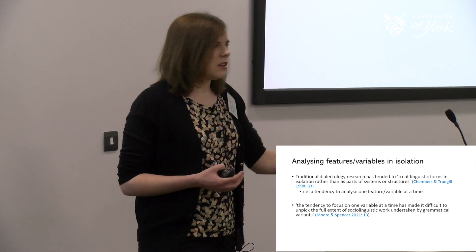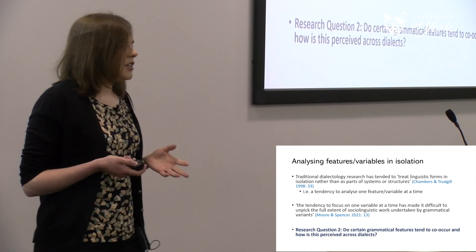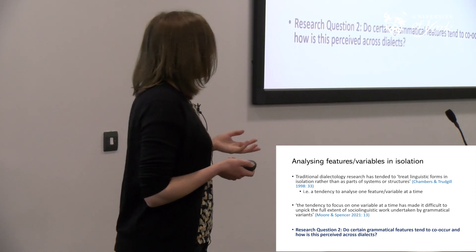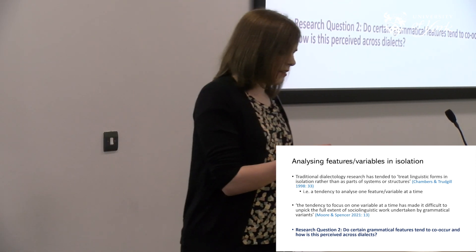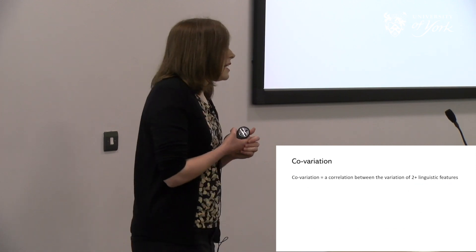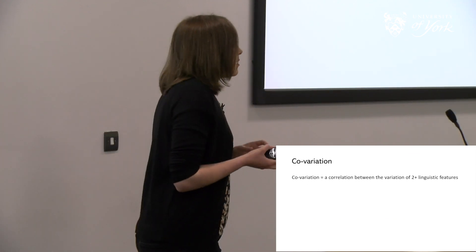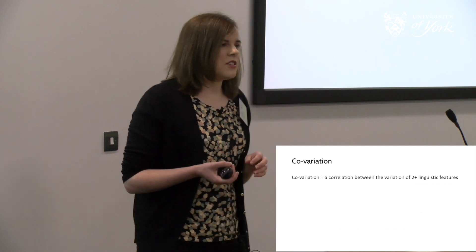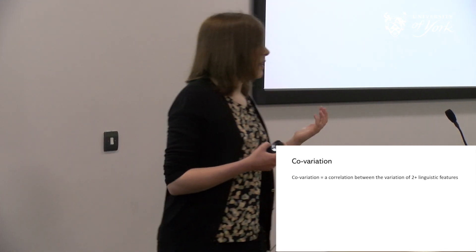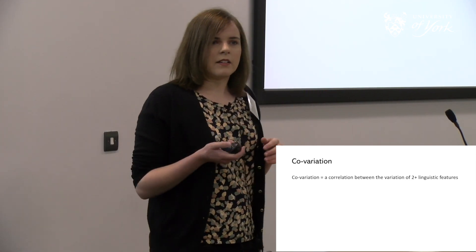Do certain grammatical features tend to co-occur with one another, and how is this perceived across dialects? A key assumption is that grammatical features might co-occur together in the same sentence. We can call this co-variation — a correlation between two features, whether grammatical or phonological, where two things you might look at separately actually pattern together.